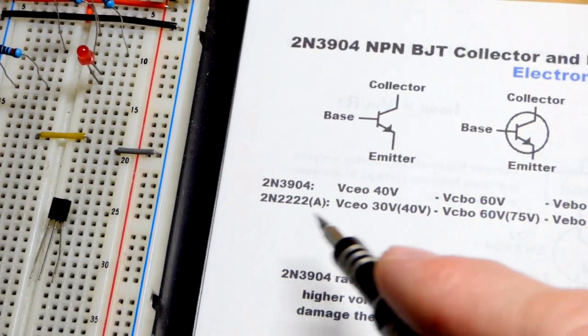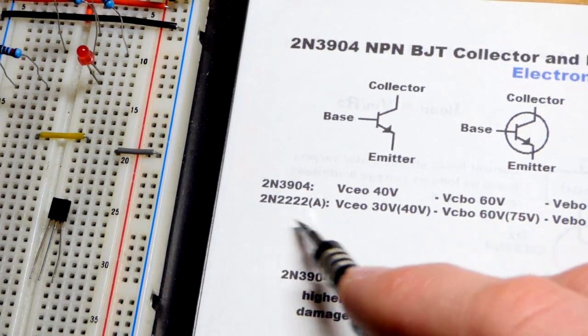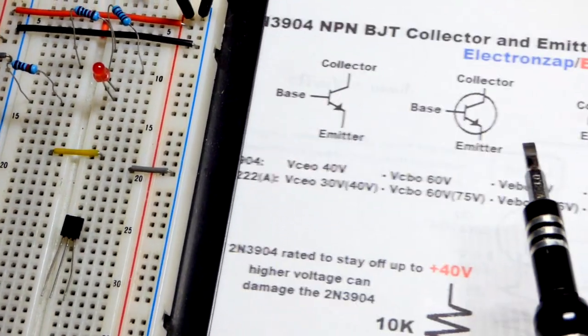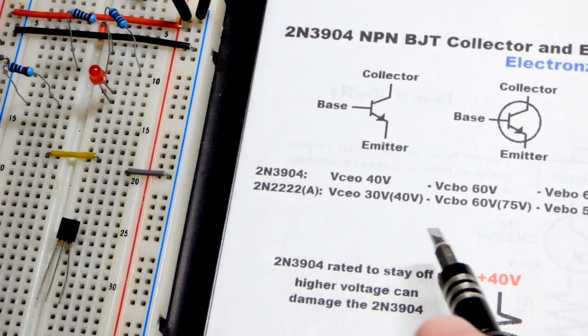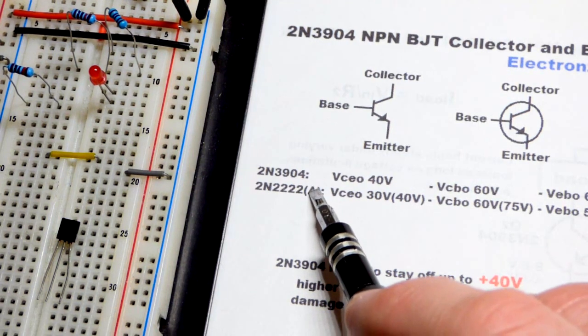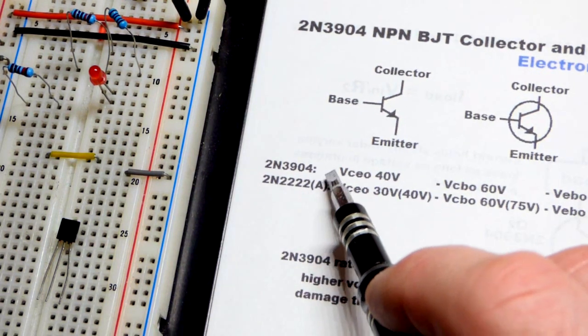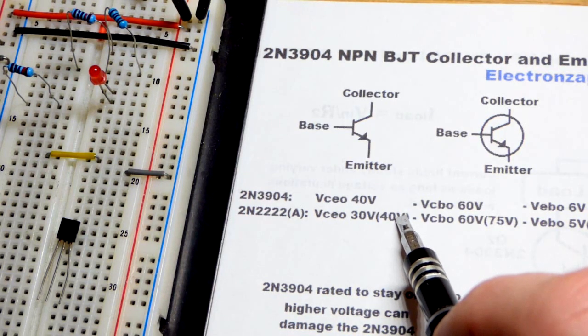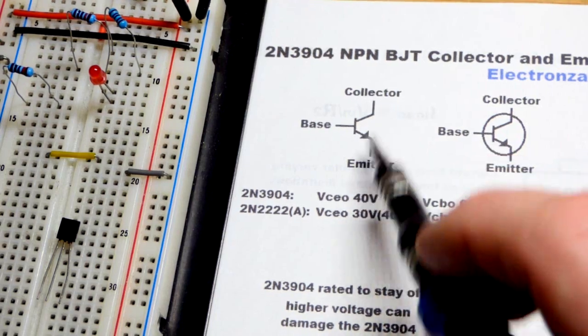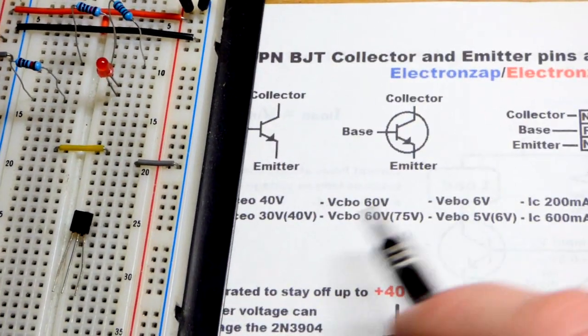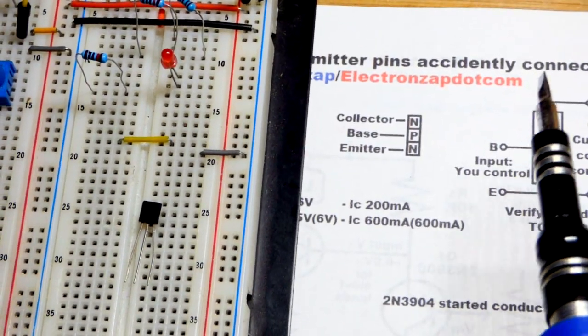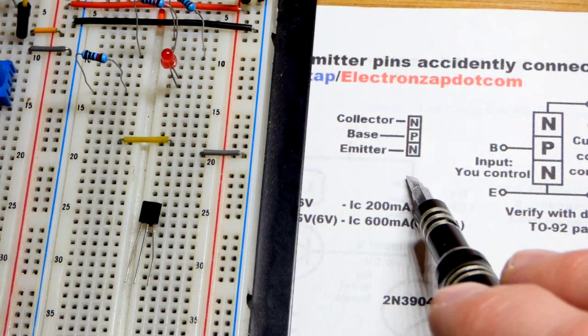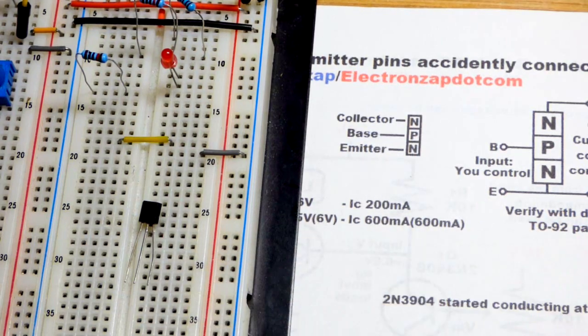I also wrote some other properties of the 2N3904 and the 2N2222. You can see they're not terribly different. It's mostly how much current the 2N2222 can handle in relationship to the 2N3904. If there's no A after it, you can expect it to block about 30 volts. If it's the 2N2222, you can expect it to block about 40 volts while it's forward bias. That's from collector to emitter. This one can only handle about 200 milliamps from collector to emitter as long as it stays within its wattage rating.